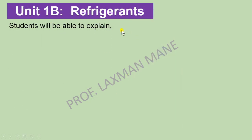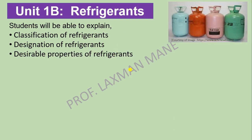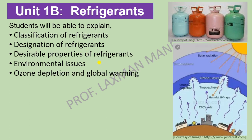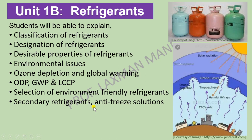Part B is based on Refrigerants, which is a medium of heat transfer used in the system. In this unit you will be able to explain Classification, Designation, and Desirable Properties of Refrigerants, Environmental Issues including Ozone Depletion and Global Warming, Refrigeration and Life Cycle Climate Performance, and Selection of Environmentally Friendly Refrigerants. Secondary Refrigerants means Brine and anti-freeze solutions, which are used to reduce the freezing point of the refrigerant. Zeotropes and Azeotropes are classes of refrigerants.